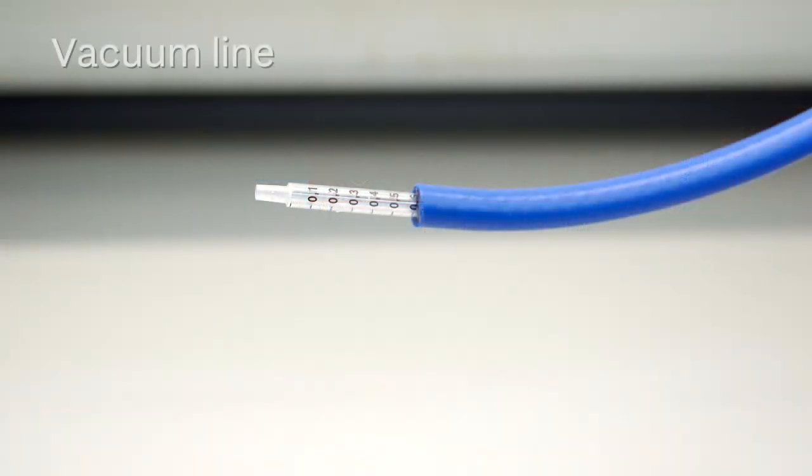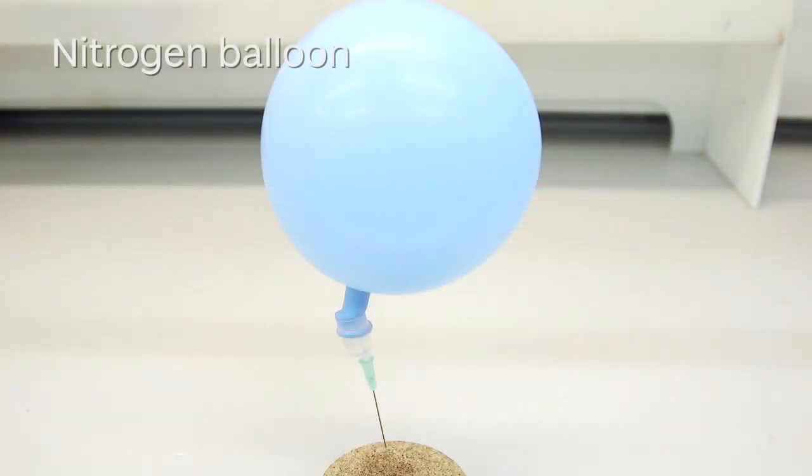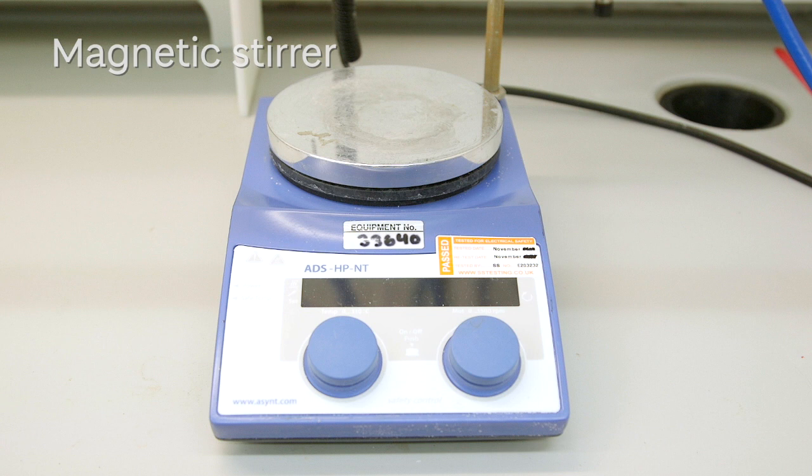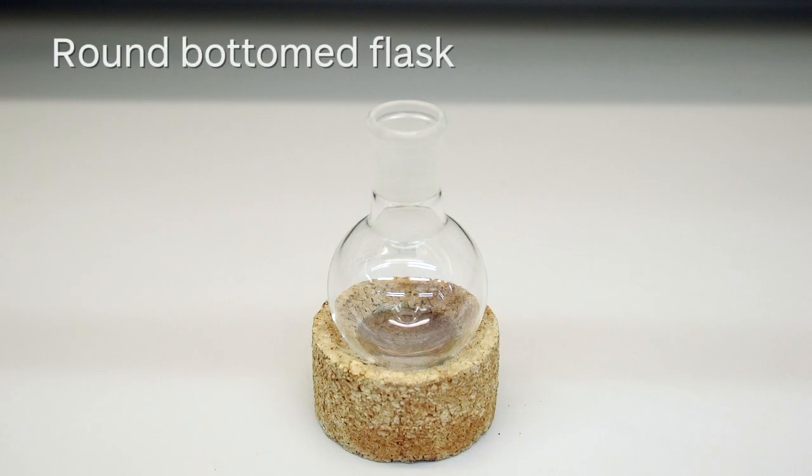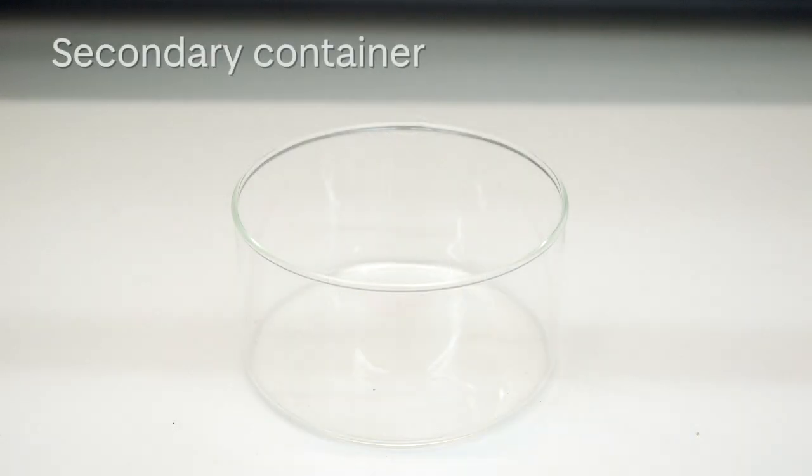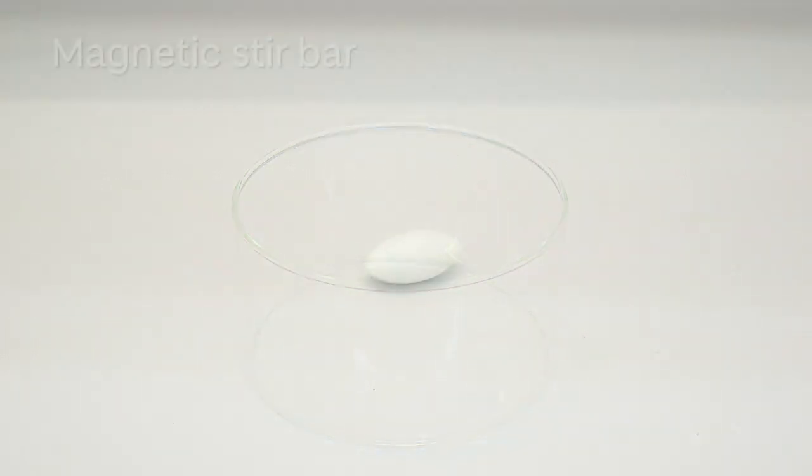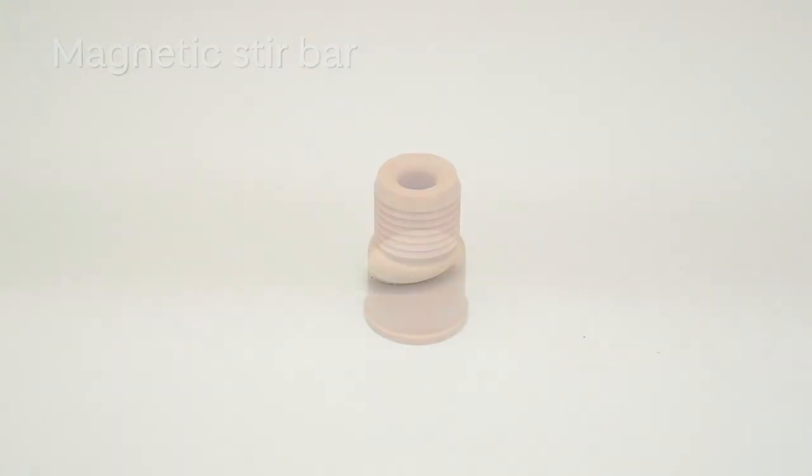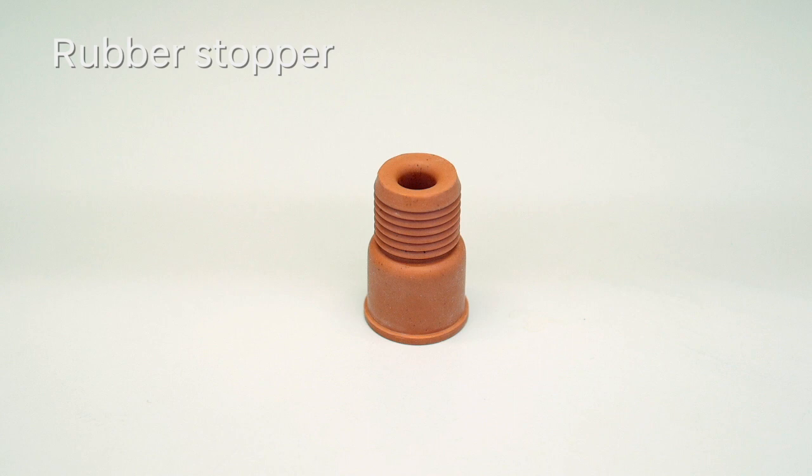For this setup we will need a vacuum line, a balloon filled with nitrogen gas, a magnetic stirrer, a round bottom flask, a secondary container, a magnetic stirrer bar, and a rubber stopper.